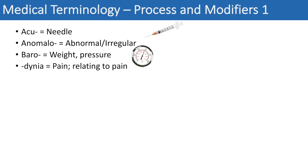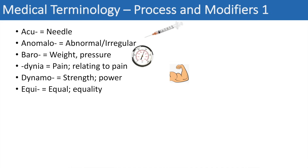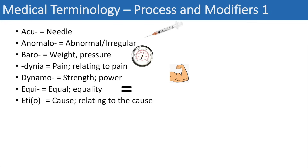The next one is -dynia, which means pain or relating to pain — you can think of allodynia. The next one is dynamo, which means strength or power, so think of dynamic. The next one is equi, which means equal or equality. Another prefix is et or etio, which means cause or relating to the cause — you can think of etiology, the cause of a medical condition.